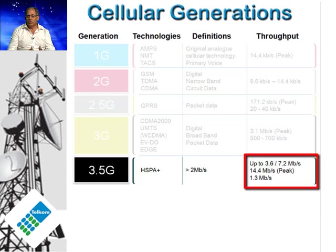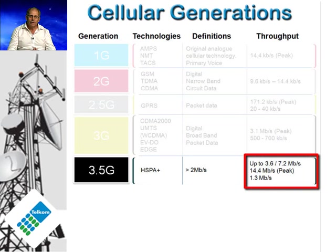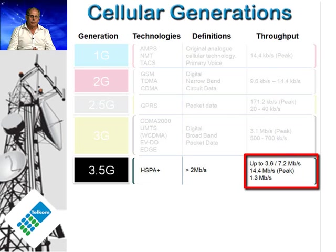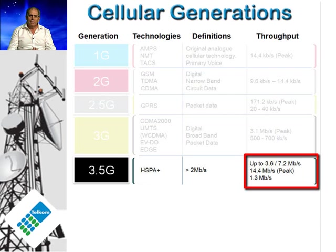Of course, as mentioned earlier, such speeds are erratic, subject as they are to effects of traffic loading, the handset's distance from the cell, and radio propagation. 3.6 and 7.2 Mbps, however, are common phenomena now, and new devices such as the latest iPhone have this technology already built in.